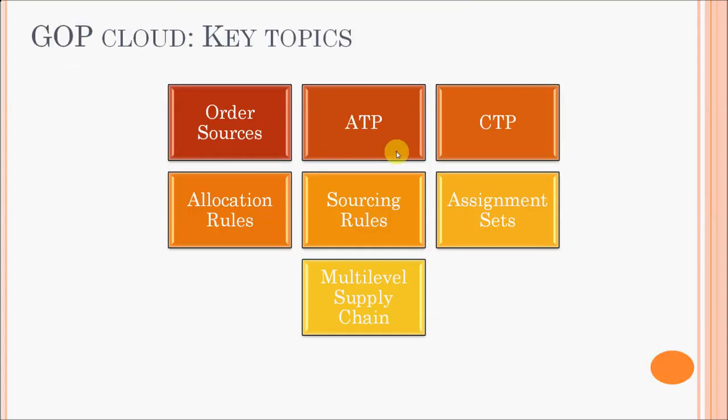Some of the key topics I'll cover in the lecture include what order sources are considered by GOP, what is available to promise, what is capable to promise, and how the allocation rules are used by GOP for allocating the shared supply for high demand. I'll also show you how you can create sourcing rules and how they are used by GOP for promising orders.